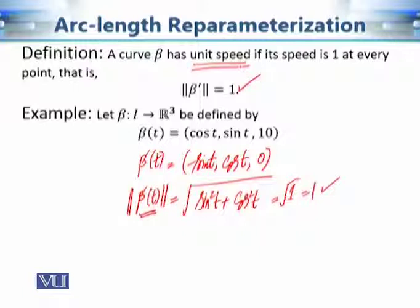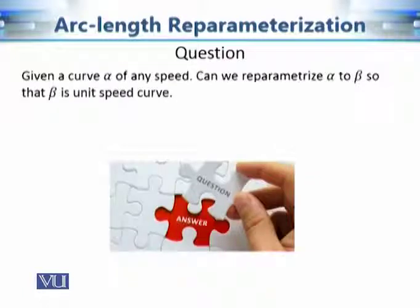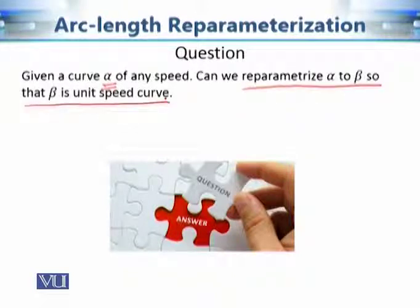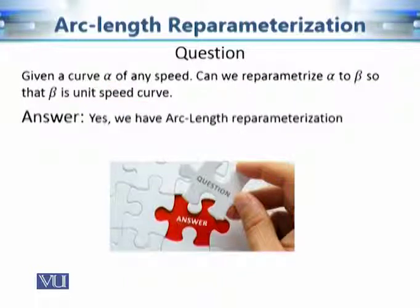That's what we want to achieve for any given curve. If a curve is given with a geometrical path associated to it, and we want to re-parameterize a given alpha to beta so that beta is a unit speed curve — when the speed is unit, most of our calculations related to the geometrical properties of curve alpha will be simplified. The answer, luckily, is yes: we have arc length re-parameterization. Let's explore what this arc length re-parameterization is and whether we can find it for any given curve alpha.